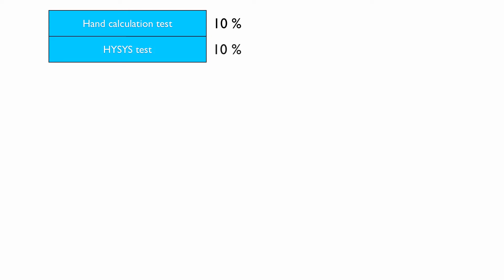This is a short video to explain the assessment in ENG 1010. The hand calculation test is worth 10%, and the HYSYS test is also worth 10%.